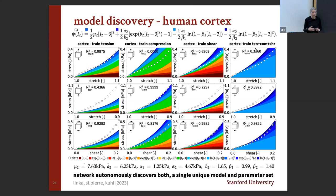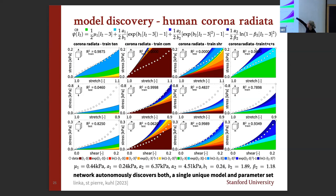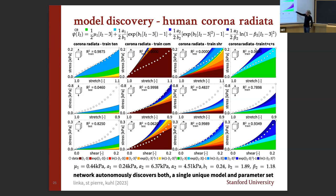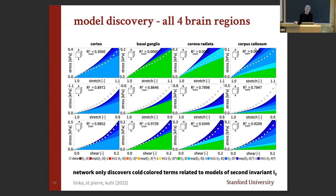Moving to another brain region, the message stays the same: good diagonal training fit, reasonable off-diagonal testing, and when training everything together, four terms remain — all only in terms of the second invariant. We can extract a shear modulus of 0.44 and exponential terms from these parameters. In every region, only second-invariant blue terms are discovered. This is interesting because for brain — unlike rubber — there was no good prior comparison. The second invariant appears to describe brain tissue quite well.